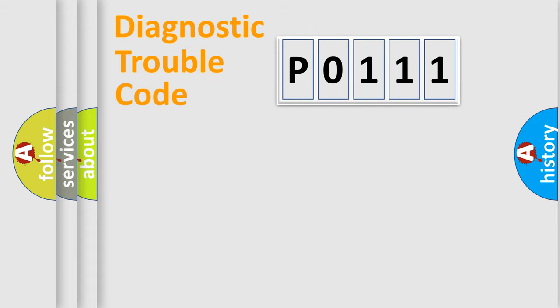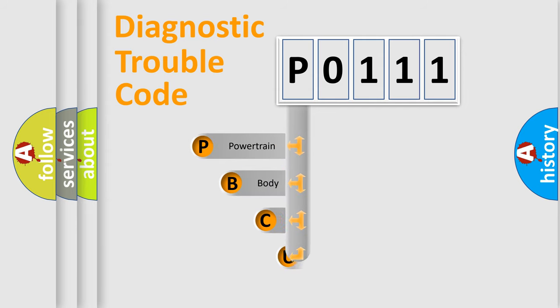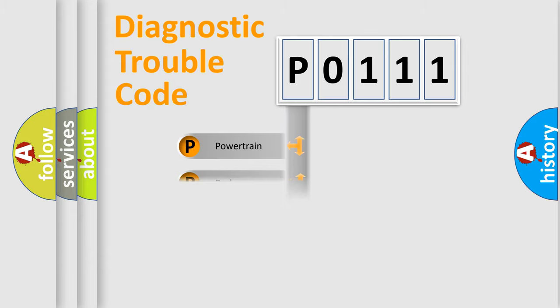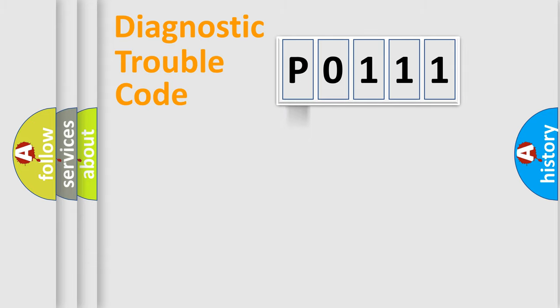First, let's look at the history of diagnostic fault code composition according to the OBD2 protocol, which is unified for all automakers since 2000. We divide the electric system of automobile into four basic units: Powertrain, body, chassis, network.